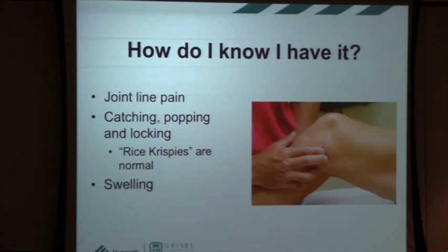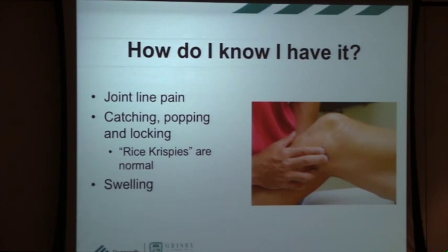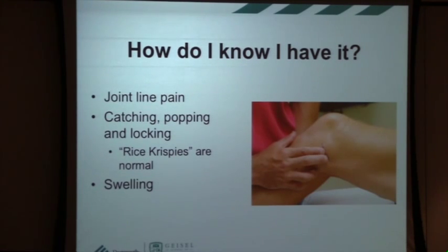How do you know if you have it? Typically people with meniscal tears have pain right on the joint line — either on the inside or the outside — and you can pinpoint it right to one place. If you come into one of our offices, someone will push right on that spot and make you jump. The other way you know you might have a meniscal tear is what we call mechanical symptoms: catching, popping, blocking. If your knee sticks in one position and you have to move it — there's a thunk and then it goes back to moving okay — that's a pretty sure sign of a meniscal tear.